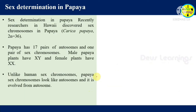Sex determination in papaya. Recently researchers in Hawaii discovered the sex chromosome in papaya. Papaya has 2N equal to 36, meaning it has 18 pairs of chromosomes.